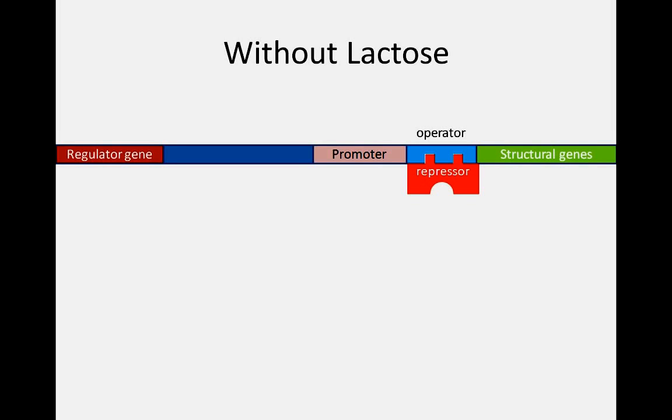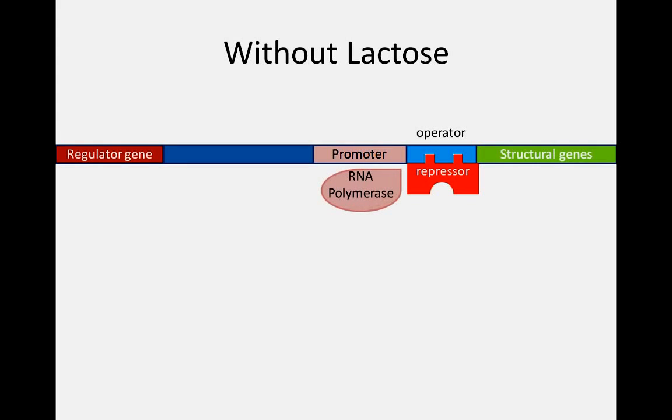The site of repressor binding is known as the operator. As long as the repressor is bound to the operator, RNA polymerase cannot proceed through the structural genes. And therefore, transcription of beta-galactosidase, permease, and transacetylase is stopped.